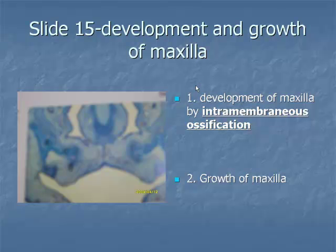Growth of the maxilla occurs by bone remodeling — that is, surface deposition of bone with associated resorption — as well as by sutural growth. Among the agents aligned for sutural growth are the growing eyeballs. Thus, growth of the maxilla is not an isolated phenomenon, but occurs in association with the development of the orbital, nasal, and oral cavities.